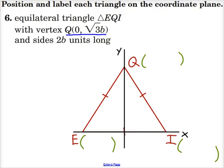So there's enough information in the directions to help us out. We already know Q. Q is at 0 and then square root of 3 times b. And the side lengths are 2b units, so all of these are 2b units long.